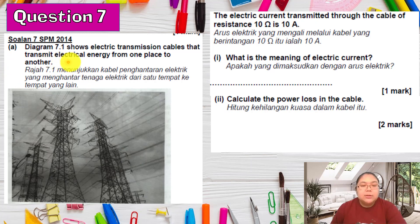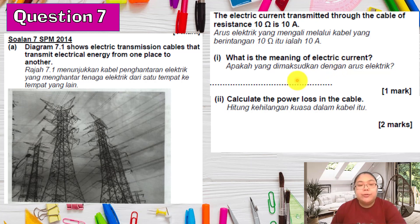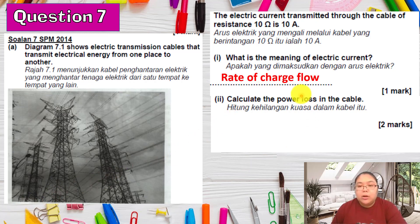We continue with question 7, which is about electric transmission cables transmitting electrical energy from one place to another. The cable resistance is 10 ohms and the current is 10 amperes. First, what is the meaning of electric current? The formula is I = Q/T. Converting the formula into words: because of the division by time, we say 'rate of,' so the answer is rate of charge flow.